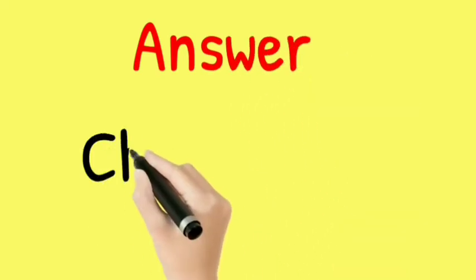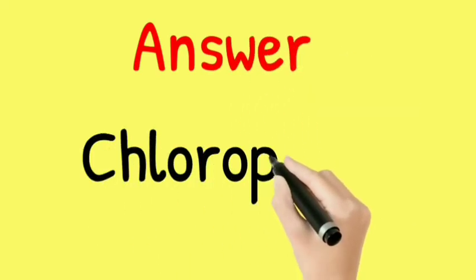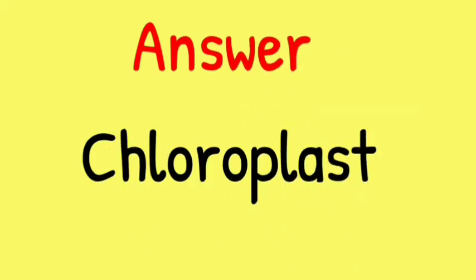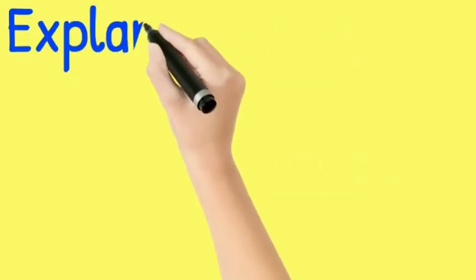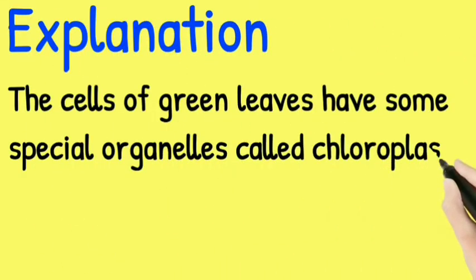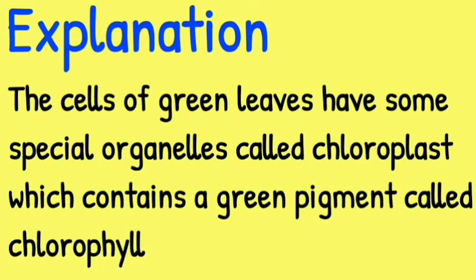The answer for this question is option number 1, which is Chloroplast. Explanation: The cells of green leaves have some special organelles called chloroplasts, which contain a green pigment called chlorophyll.